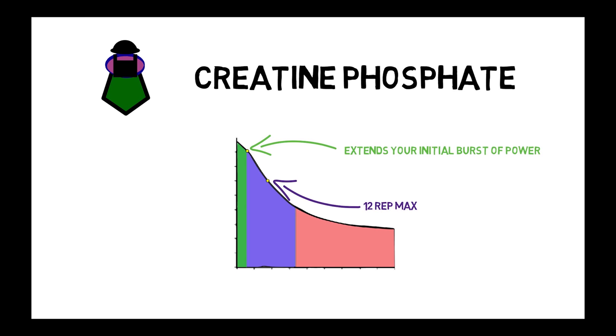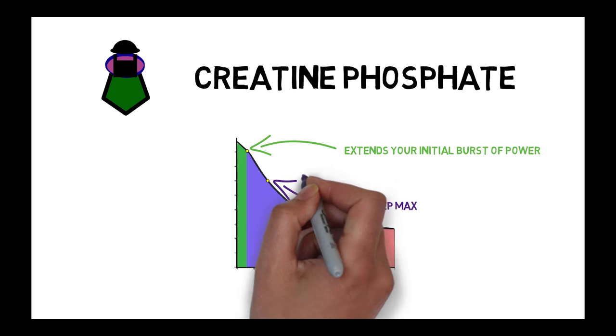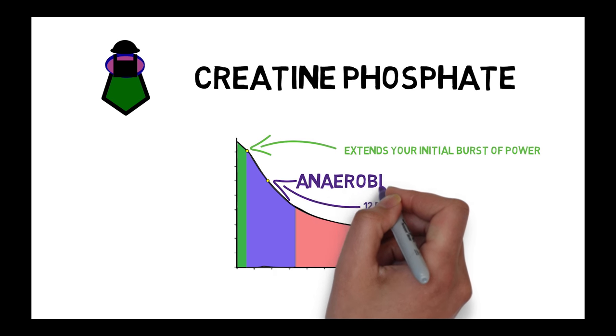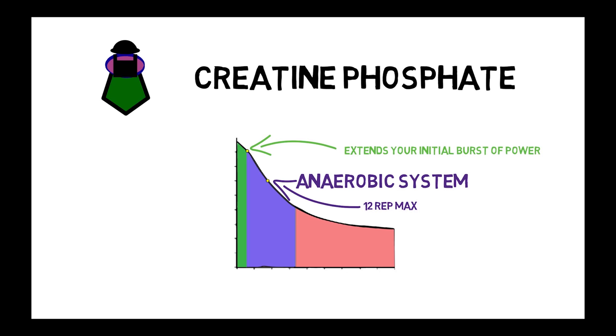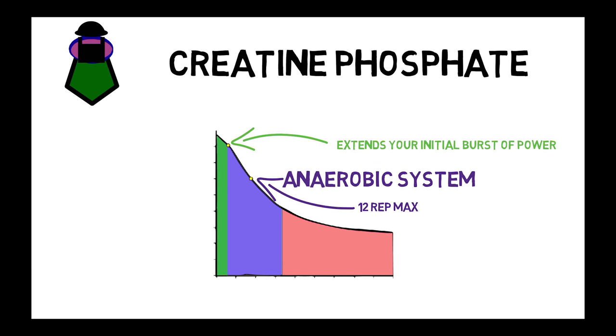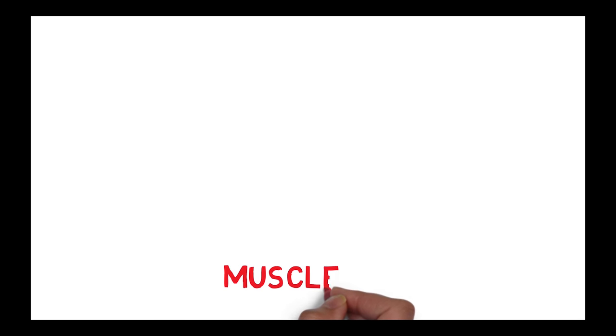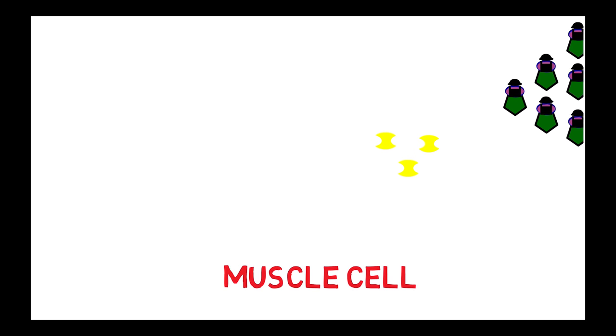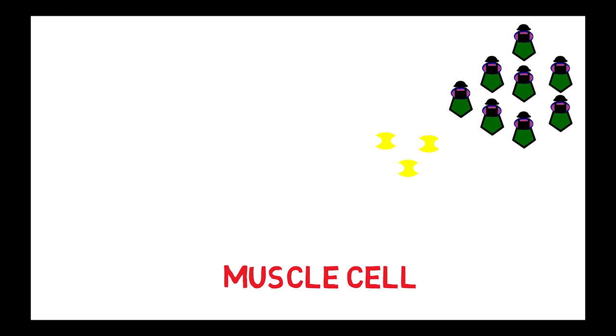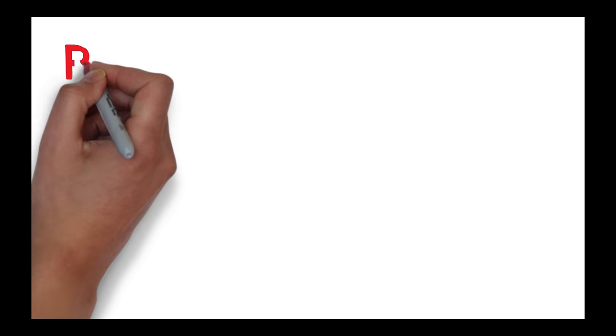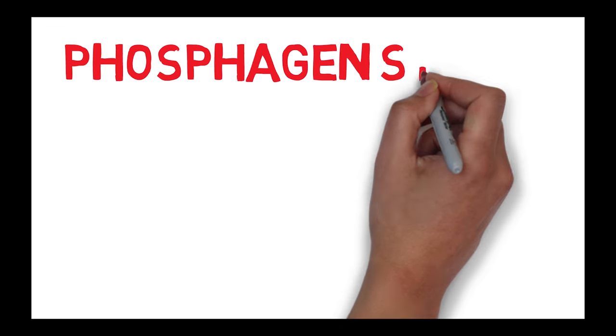When it runs out, your body is forced to notch down to its next most powerful energy system, the anaerobic system, which, although good, can't produce the same amount of energy as the phosphagen system. This is why your 12 rep max weight is so much less than your 3 rep max weight. So you see, creatine kinase enzymes are found naturally in our cells, along with a supply of creatine phosphate to revive those ADPs into fresh energy. This is our body's own system. It's called the phosphagen system.